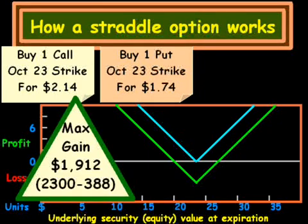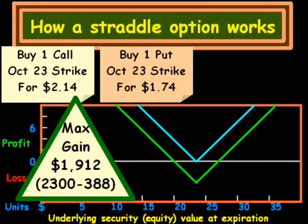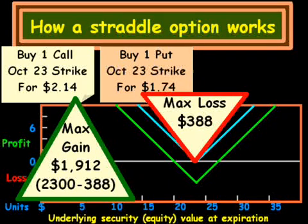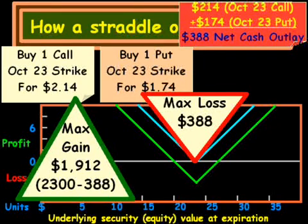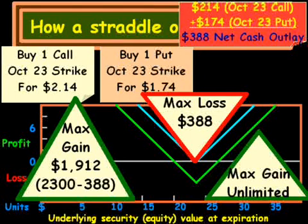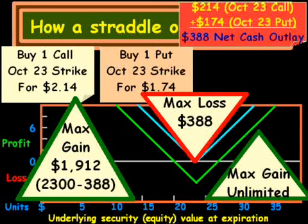The maximum amount we can gain on the left side is $1,912, and that number is derived from taking $23 — the strike price — and subtracting the $388 cost for the transaction, giving us $1,912. The maximum loss we can lose is $388, which is essentially the amount of cash we've spent. Keep in mind, we're not assuming brokerage fees, so actual transaction costs in real life would be higher. On the right side, our maximum gain is unlimited as the stock can go up to any potential price — theoretically unlimited with a lot of potential on the right side.